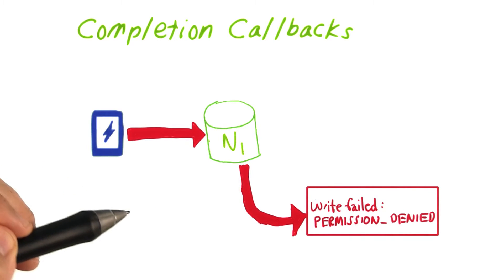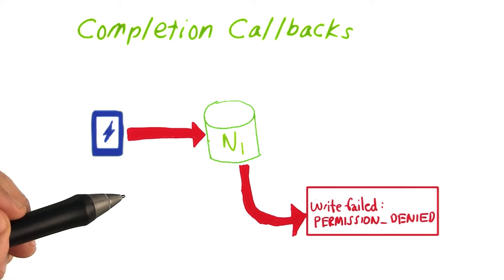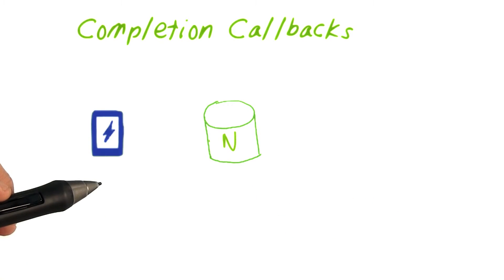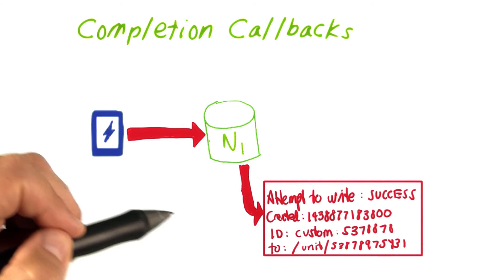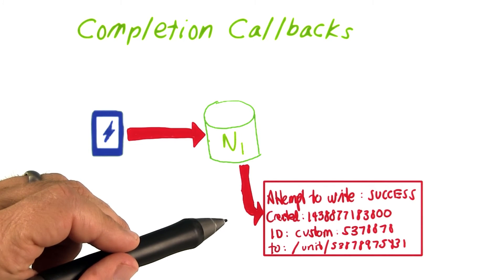We aren't using completion callbacks in shopping list plus plus. However, there are a few situations where using completion callbacks would be useful. A basic use would be to provide detailed debugging information in the dev and test phase, for example, to provide an explicit way to verify that data is being saved.